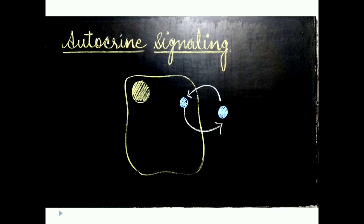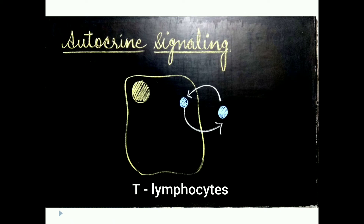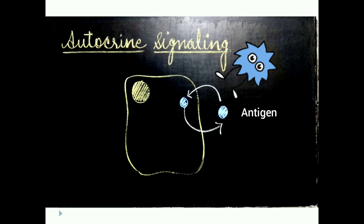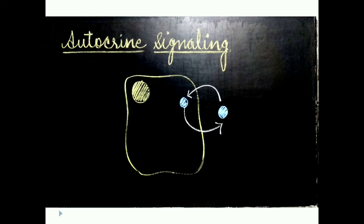As shown in this diagram, the cell produces a signaling molecule from itself, releases it, and then that signaling molecule acts on the same cell. A classic example of autocrine signaling is T-lymphocytes. When T-lymphocytes receive antigenic stimulation, they synthesize a growth factor, release it, and then receive it themselves. This triggers T-lymphocyte proliferation and amplifies the immune response.